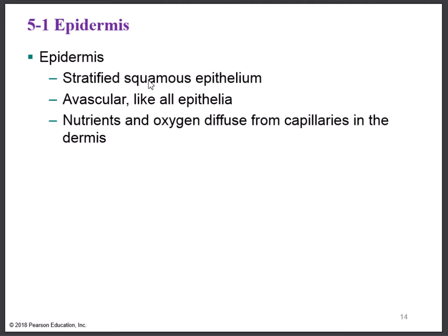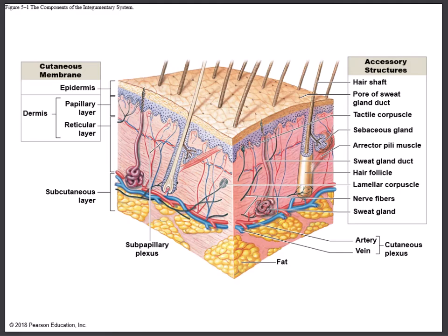Squamous means the cells appear flat. Now this epidermis is avascular, meaning there's no direct blood supply going to the epithelial cells — this is a characteristic of epithelium. But here's the problem: some of the cells in the lower part of the epidermis are living cells, and living cells require oxygen and nutrients, and they have to get rid of waste products. So how do they do it?